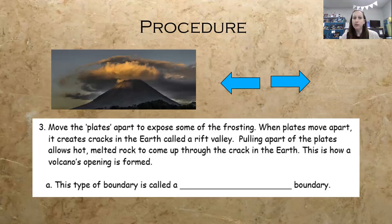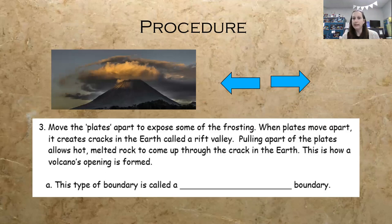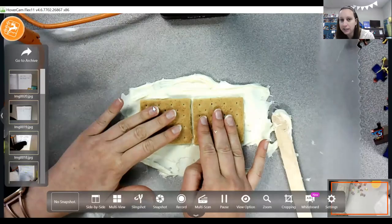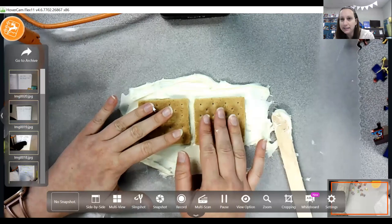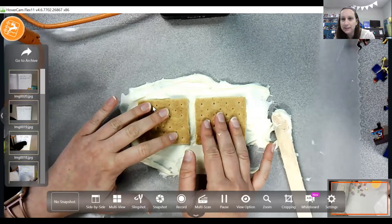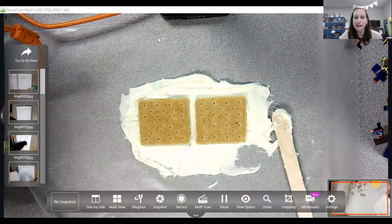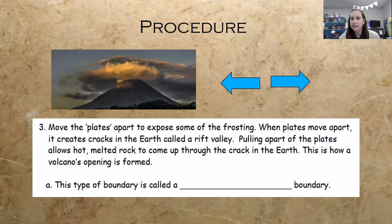Here's where the fun begins — we get to create those boundaries. Pull the plates, those graham crackers, apart to expose some frosting. When those plates move apart, kids will see that it creates cracks in the Earth called a rift valley. Pulling those plates allows the hot melted rock to come up through the crack, and this is how a volcano's opening is formed. This is also how the mid-ocean ridge is formed — those plates diverge, the hot melted rock comes up, it cools, and we get the mid-ocean ridge. So divergent plates divide — we have successfully represented a divergent boundary.